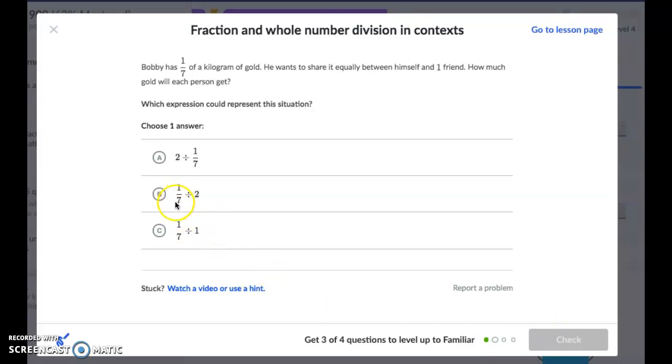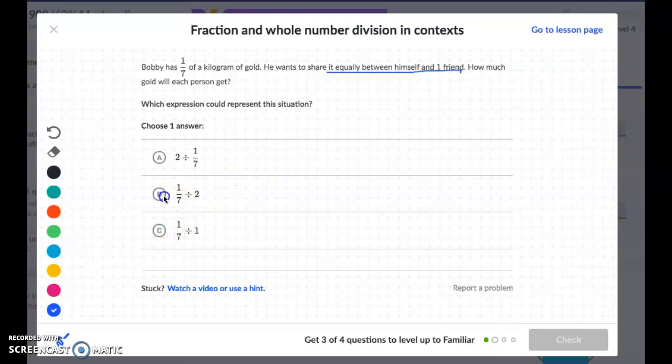Now we're looking at 1 seventh divided by 2 or 1 seventh divided by 1. In this case, it's important to notice that it says share it equally between himself and one friend. So 1 seventh divided by 2.